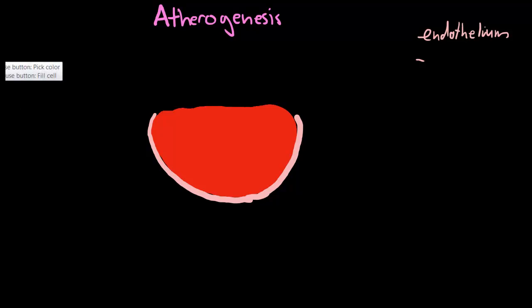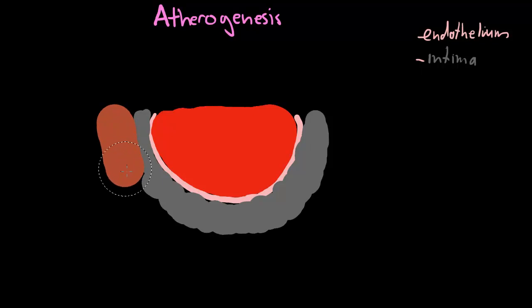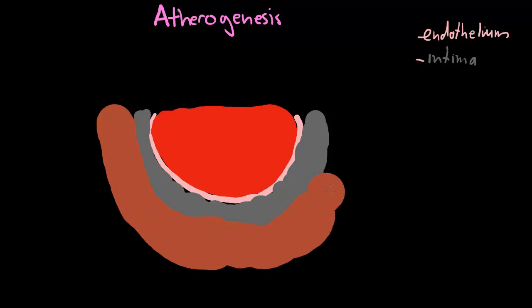The next thing I'm going to draw is the endothelium itself, or the sub-endothelium. I'm drawing this a bit bigger than what it actually is. The next part is the media — the endothelium is full of elastic fibres, it's very stretchy. And the next part is just the adventitia.